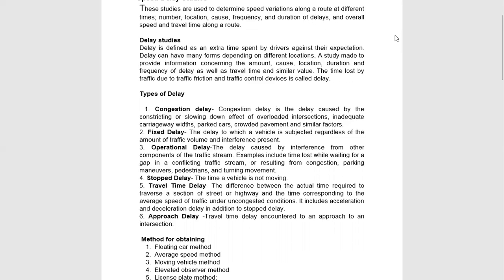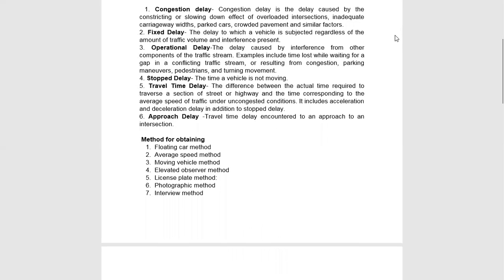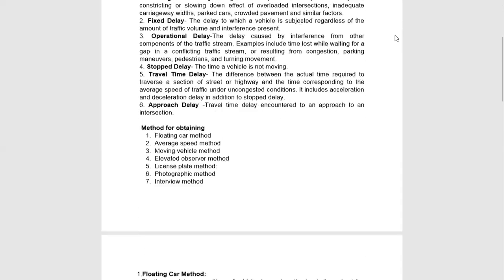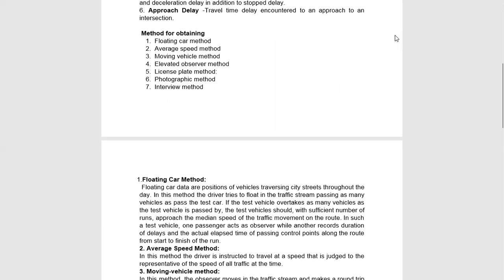What is the method of obtaining speed delay? The first method is the Floating Car Method. Floating car data are positions of vehicles traversing a city throughout the day.